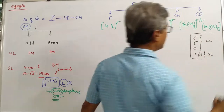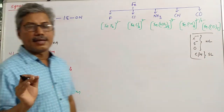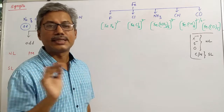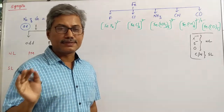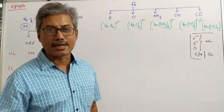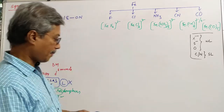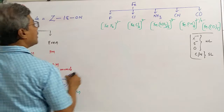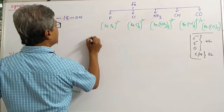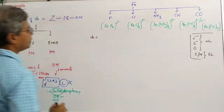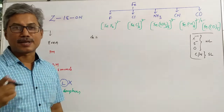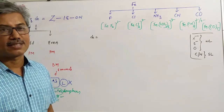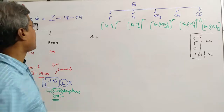If the ligand has carbon or nitrogen as the donor atom, then it will act as a strong field ligand. Remember this — it will be very easy. Except carbon and nitrogen as the donor atom, all ligands are weak ligands. If the donor atom is carbon or nitrogen, then it will be a strong ligand. Once you know the D electrons, we can determine the paramagnetic property, hybridization, CFSE value, etc.